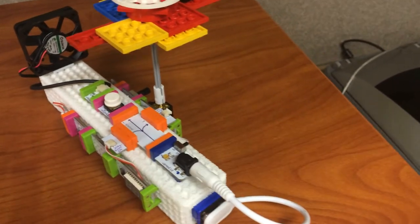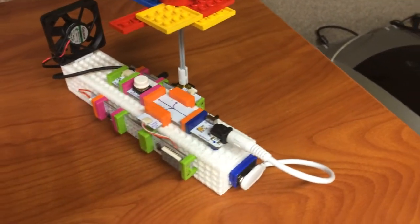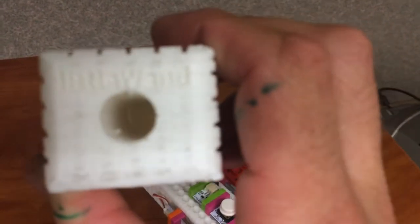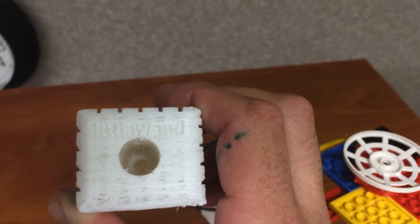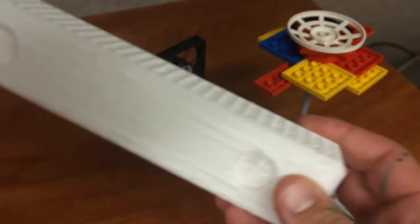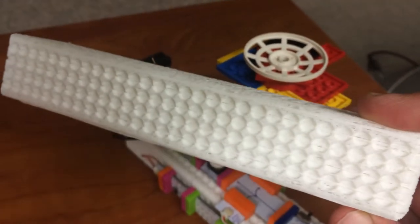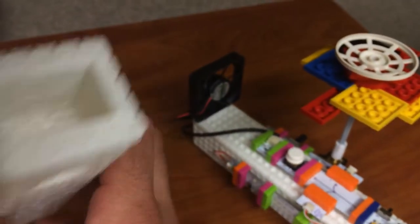So here we have the Sunny Buddy built on a recently prototyped invention that I'm calling the Little Wand. A little hard to read there. So this is something that I 3D printed on our MakerBot Z18 after designing it in SOLIDWORKS.